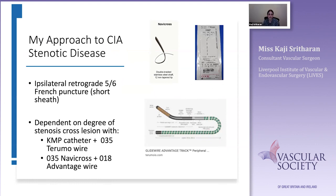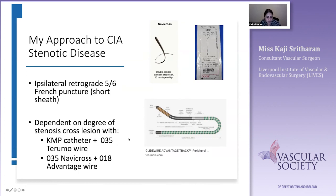For my general approach to common ILIAC stenotic disease, I go for an ipsilateral retrograde approach — tackling the same side as the lesion. I usually start with a 5 or 6 French short sheath, puncture the common femoral artery or the patch in a hybrid approach. Depending on the degree of stenosis, I'll use an 0.035 Glidewire with a KMP catheter, or an 0.035 Navicross with a hydrophilic-coated catheter and an 0.018 Advantage wire, which is one of my favourite wires for crossing tight stenotic lesions.